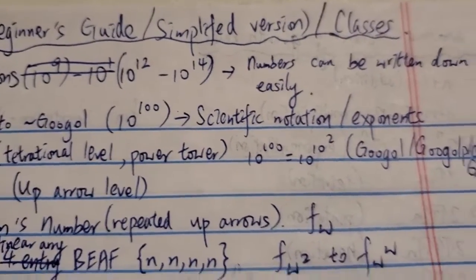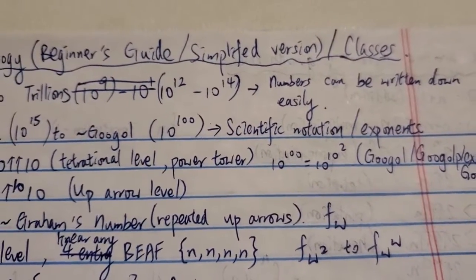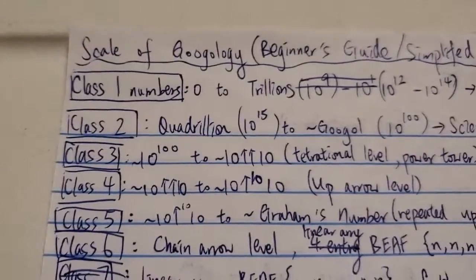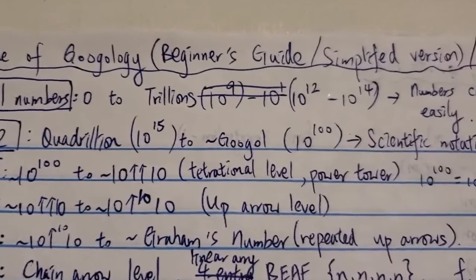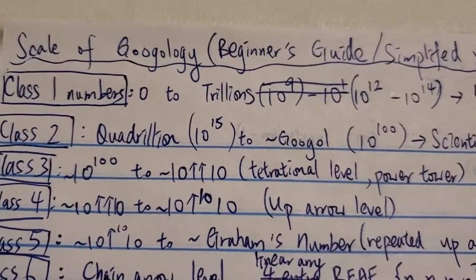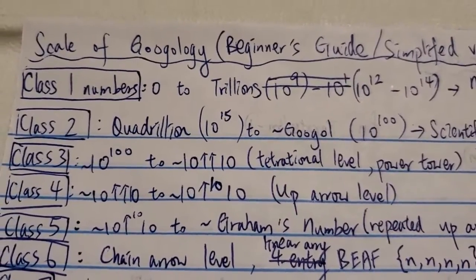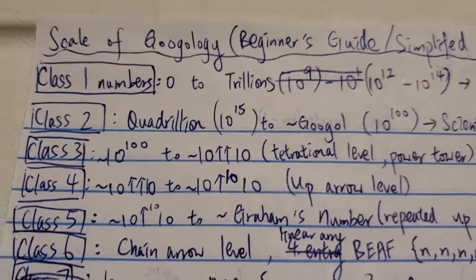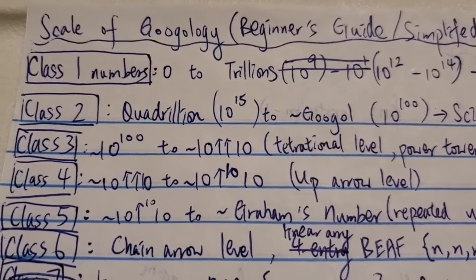These are numbers that can be written down easily in full. You can write down all the zeros relatively easily. That's class 1. I picked trillions because that's where most people, most regular people know. They probably don't know anything higher than trillions.